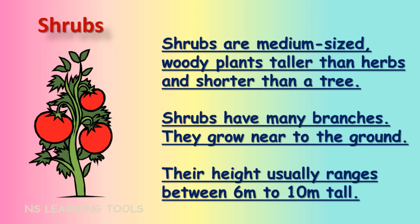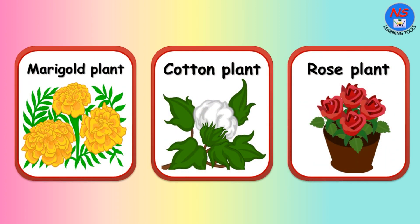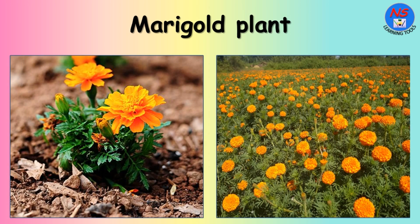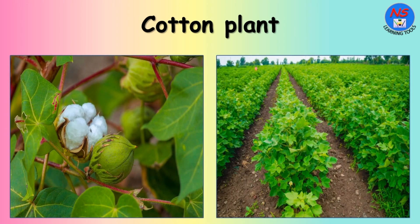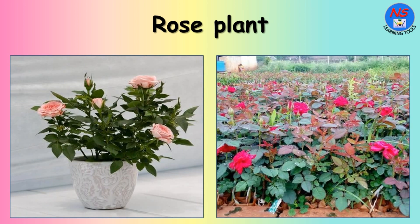Shrubs are medium-sized woody plants, taller than herbs and shorter than a tree. Shrubs have many branches and grow near to the ground. Their height usually ranges between 6 m to 10 m tall. Marigold plant, cotton plant, and rose plant are examples of shrubs. Cotton plants are medium-sized woody plants. Rose plants have many branches and grow near to the ground.